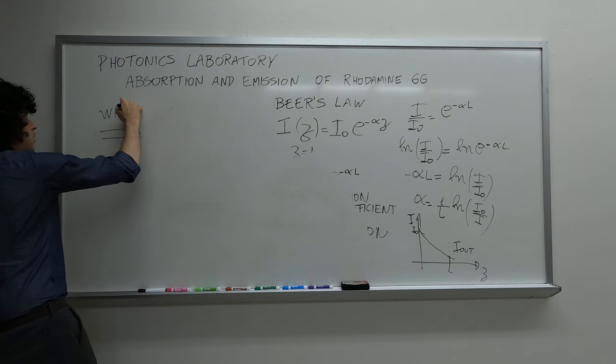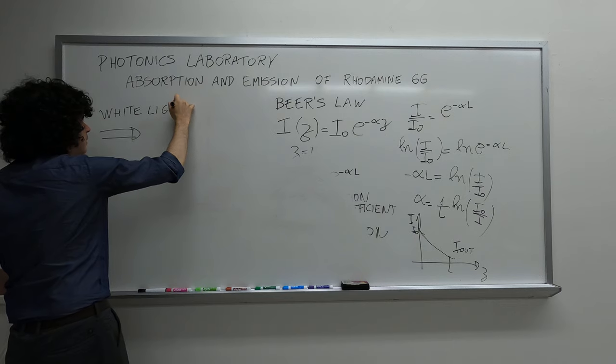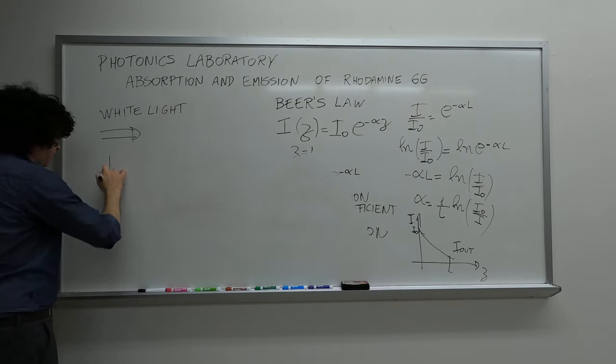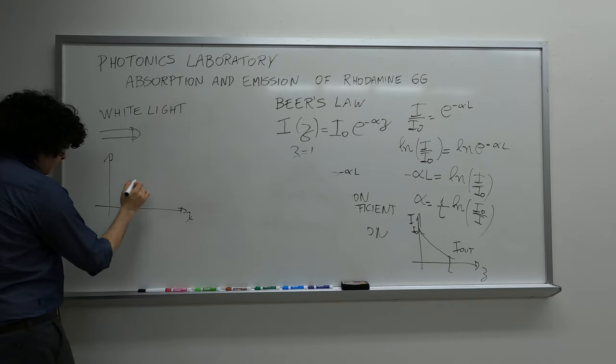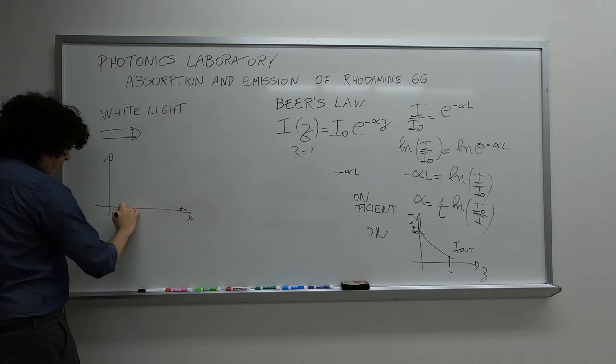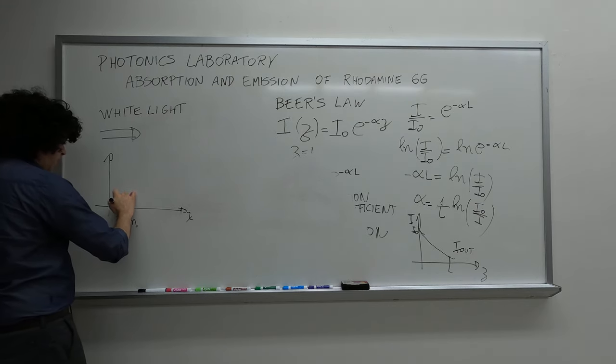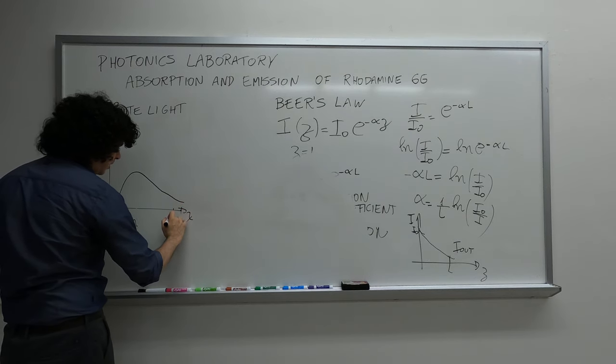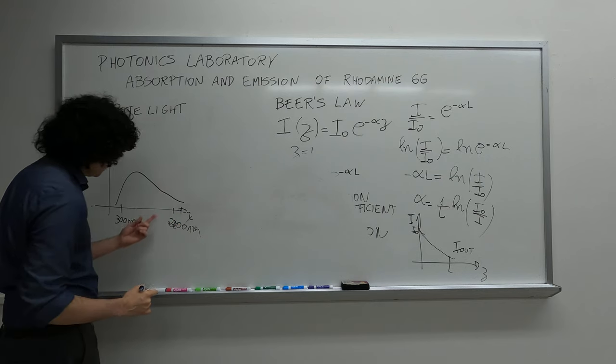I have white light. So this was a broadband light that would go from near the ultraviolet, 300 nanometers, up to the near infrared. So this was around 2200 nanometers, so more or less in this range.